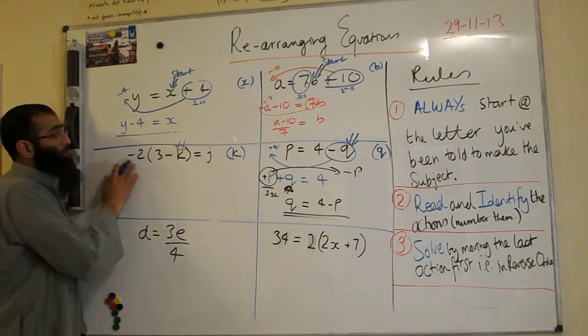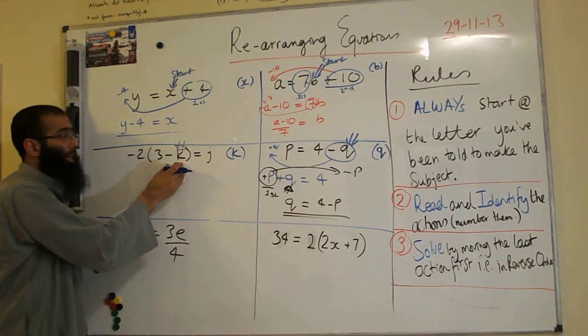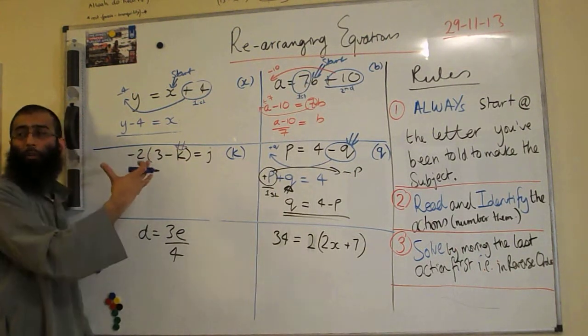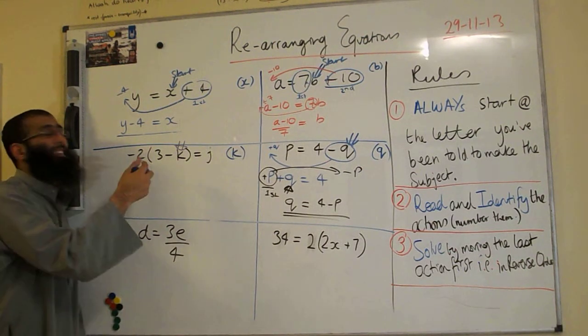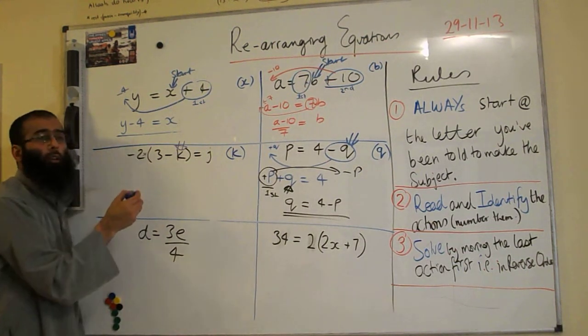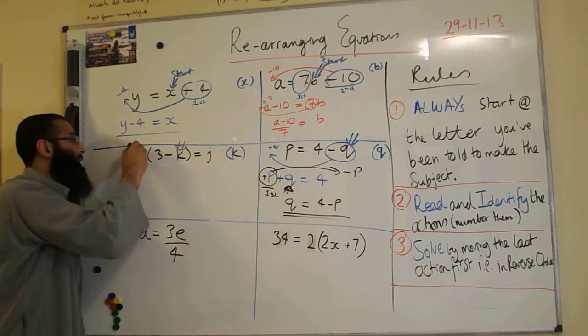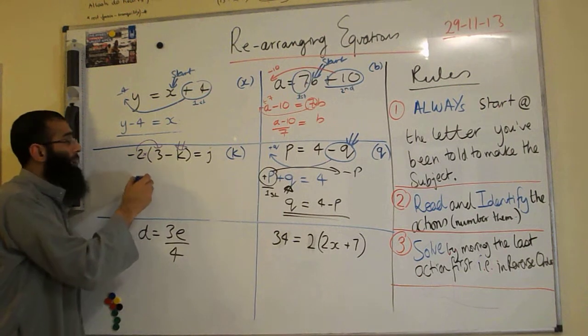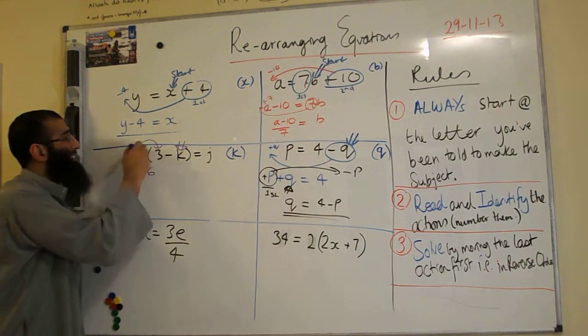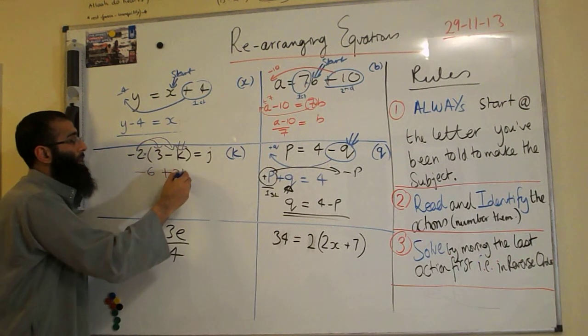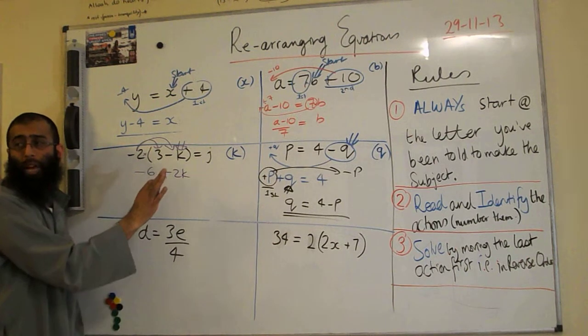We have minus 2 brackets 3 minus K equals J. We started the K. We need to release this 3 minus K from the bracket. It's been held there by minus 2. Minus 2 is timesing it. So we have to multiply the bracket out first to release the K from inside that. So minus 2 times by 3 will give us minus 6. Minus 2 times by minus K will give us plus 2K. And as you can see here, the minus K has now become positive.